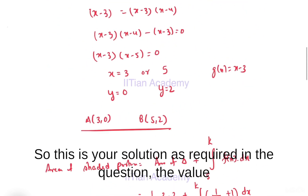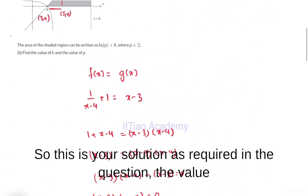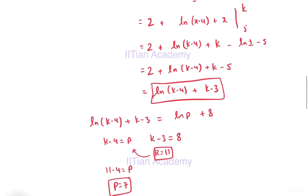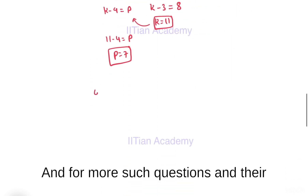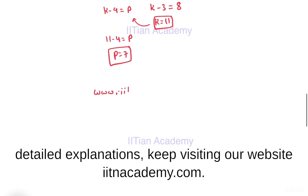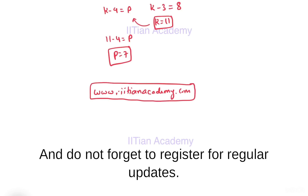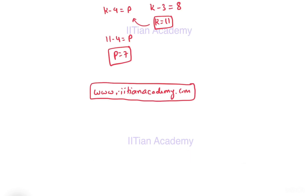This is the solution as required in the question. The value of K is 11 and the value of P is 7. For more such questions and their detailed explanations, keep visiting our website iitnacademy.com and do not forget to register for regular updates. Thank you.